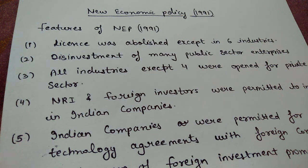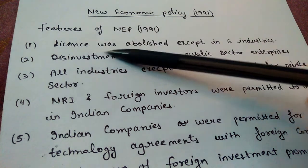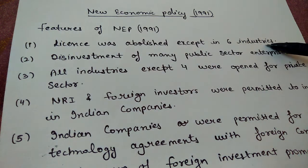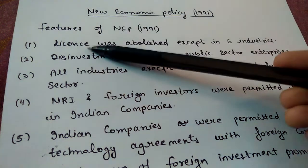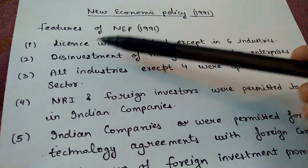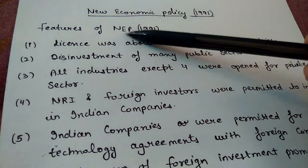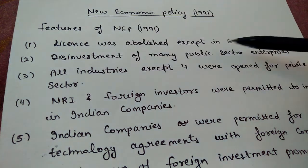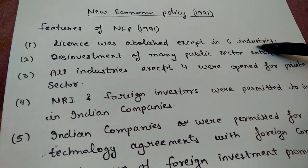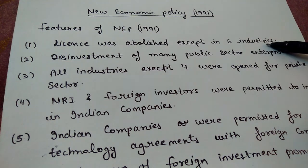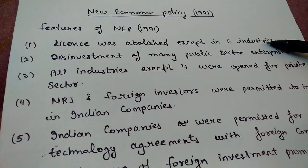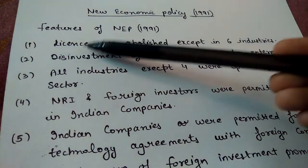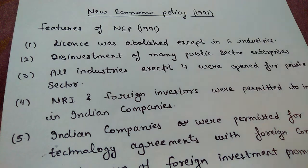The first feature is that the license was abolished except in 6 industries. The license or quota system was removed under NEP. Only 6 industries still required a license to start and run; otherwise, the rest of the quota system was removed.